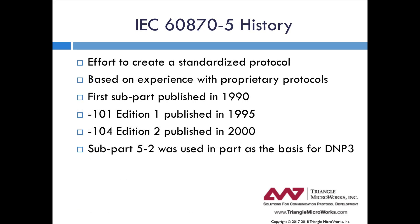Let's start with a quick history of 60870-5. This protocol goes way back to the early 1990s, when they started working on standardizing a protocol for telecontrol and SCADA systems. The first subpart was published in 1990, and the original subparts talked mostly about the lower level layers. Finally in 1995, the 101 spec came into being, leveraging all of the original subparts. In 2000, the 104 spec was introduced, which is very similar to 101 but focused more on TCP/IP applications, whereas 101 is serial. DNP is also based in part on the 60870-5 subparts, so it is somewhat similar, and throughout this presentation we'll point out some of the major differences between the two standards.